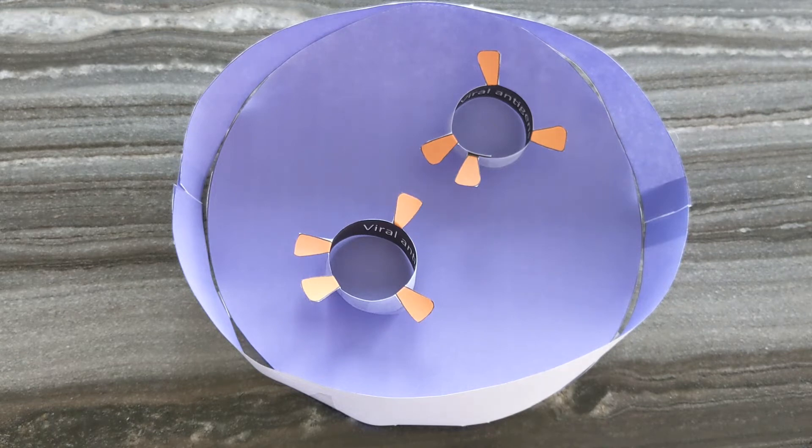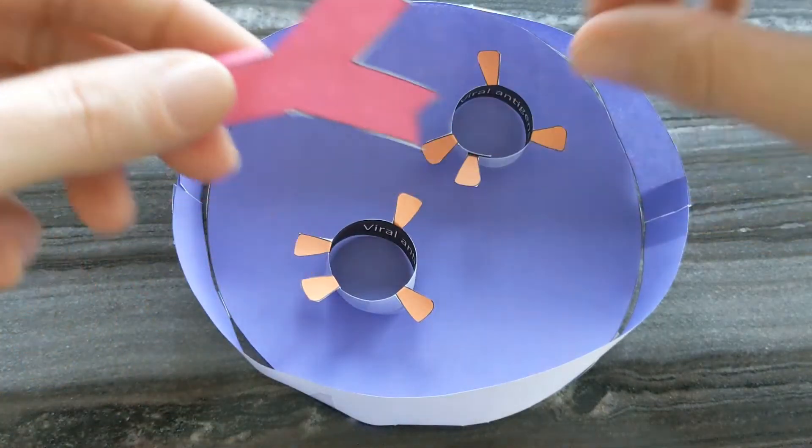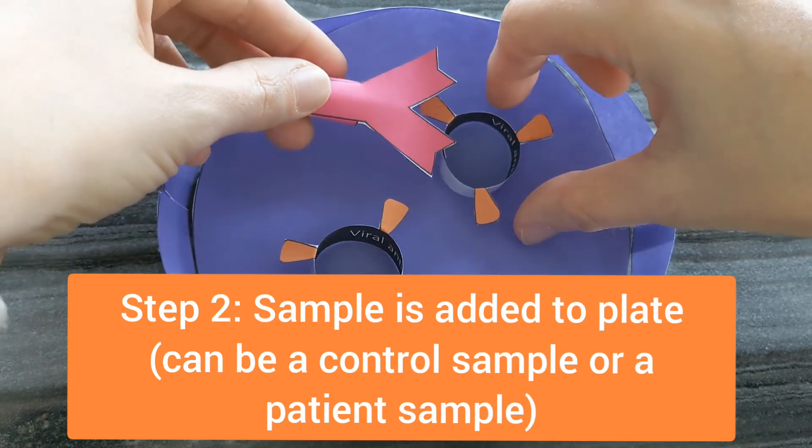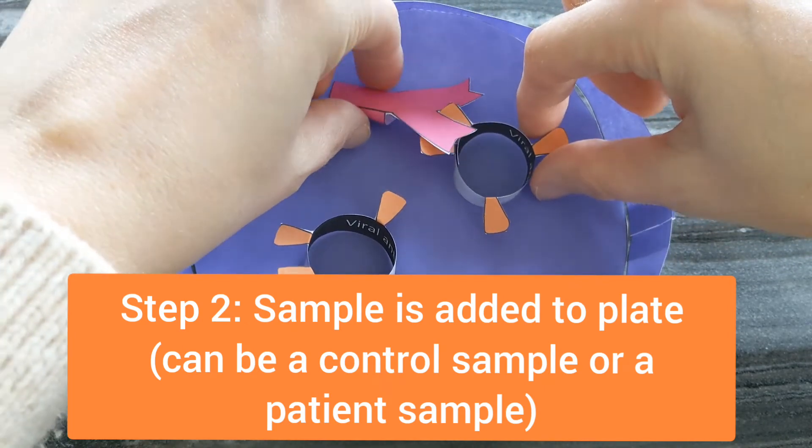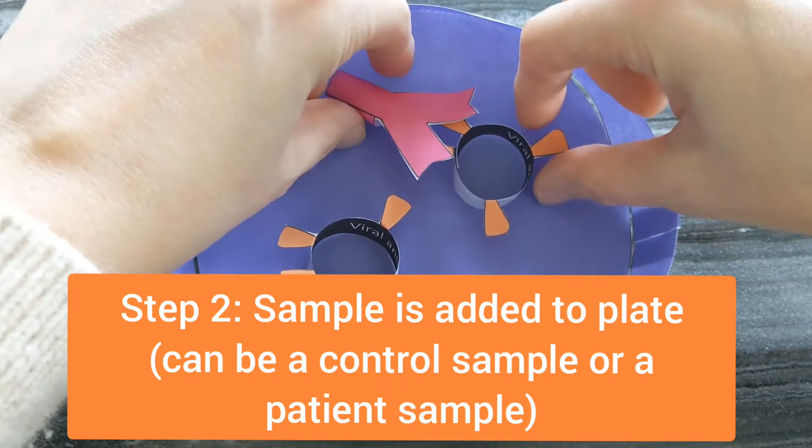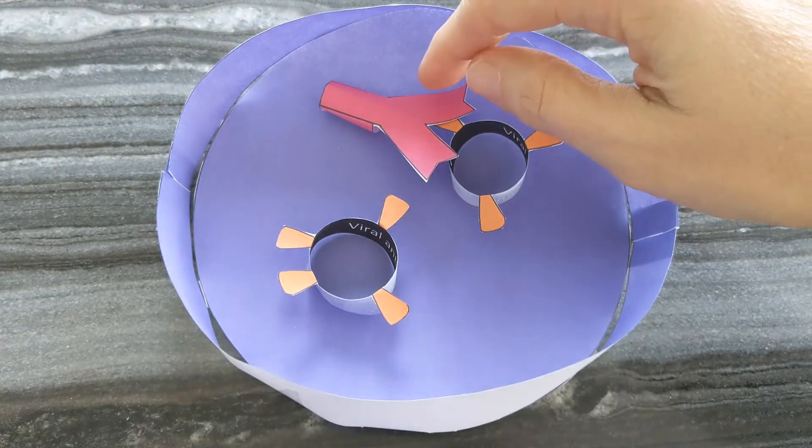The second step is that we add our samples to the plate and we're going to start by imagining that we have a positive sample. If the patient is positive for antibodies, then the antibodies are going to stick to the antigen.